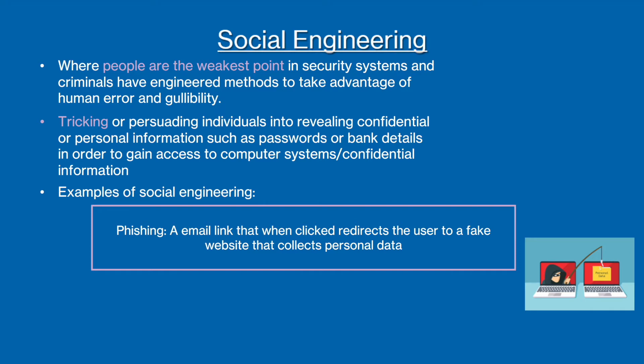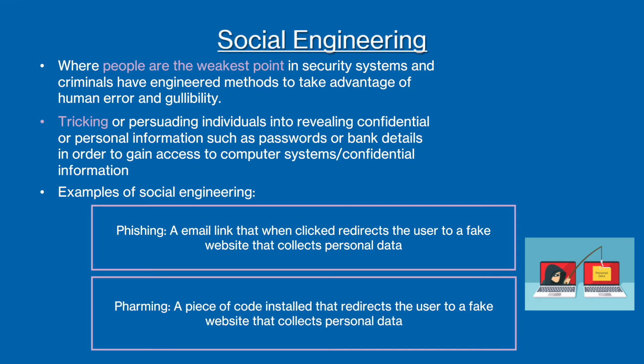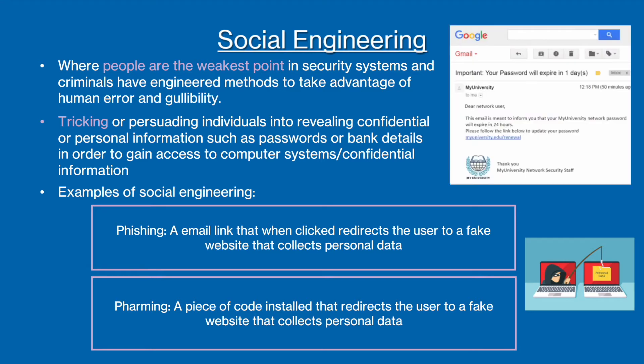The second type of social engineering is pharming, which follows a similar process to phishing. However, there is no email involved. In pharming, a piece of code installed redirects the user to a fake website which collects personal data. Here you can see an example of a social engineering attack, where a fake email has been constructed with a link meant to take the user to a website for them to input their personal details. Often, the fake emails or text messages will be around a believable scenario, such as a banking confirmation, or in this case a university account password expiring.